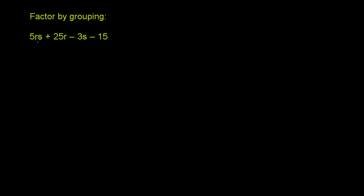Factor by grouping. We have 5rs plus 25r minus 3s minus 15. The reason why we're going to factor by grouping is that there's no common factor to all four of these terms.